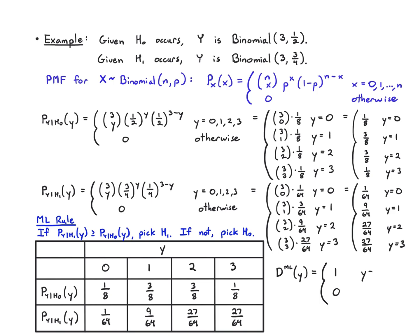So where is it bigger? 1/8 is bigger here, so that goes to 0, 3/8 here, that goes to 0, 27 over 64 here, and again those go to 2 and 3. So the decision 0 goes on 0, 1, and the decision 1 goes on 2, 3.